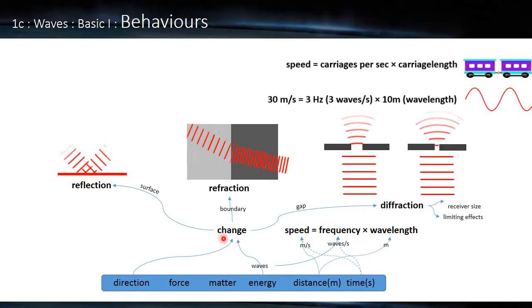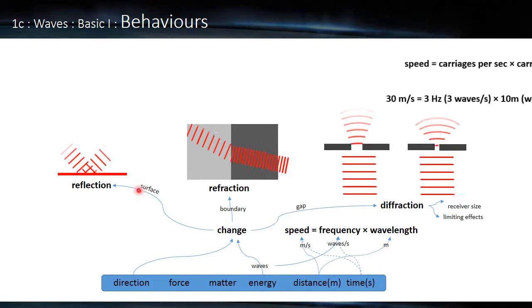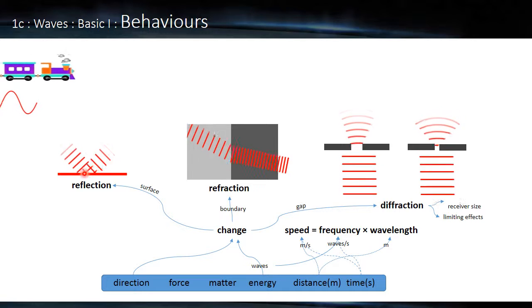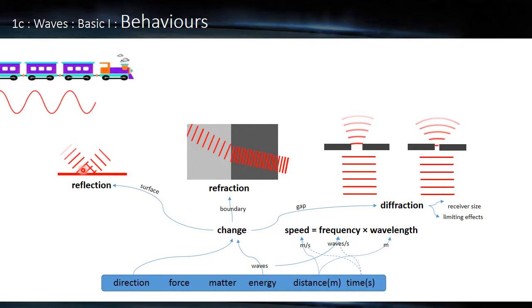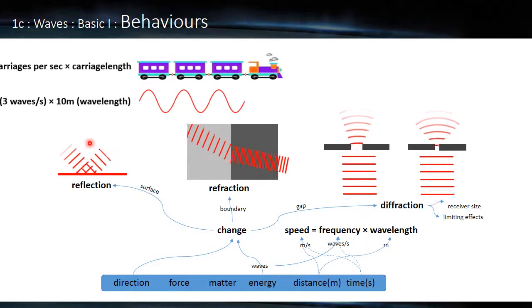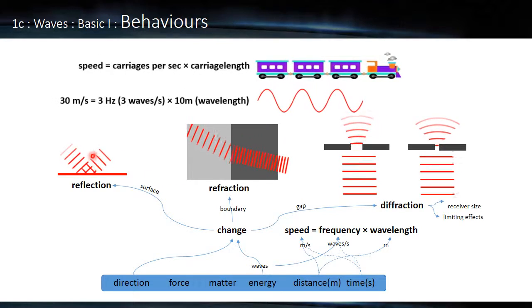So let's get back to this change of direction. We've got three kinds of change of direction. We've got at a surface, at a boundary, and at a gap. Now the one at the surface we're most familiar with, because we see it every day in the mirror. So we've got the wave front coming in, and it's reflected off, and it's a corresponding angle. If we imagine a line down here, the angle of incidence is going to equal the angle of reflection.